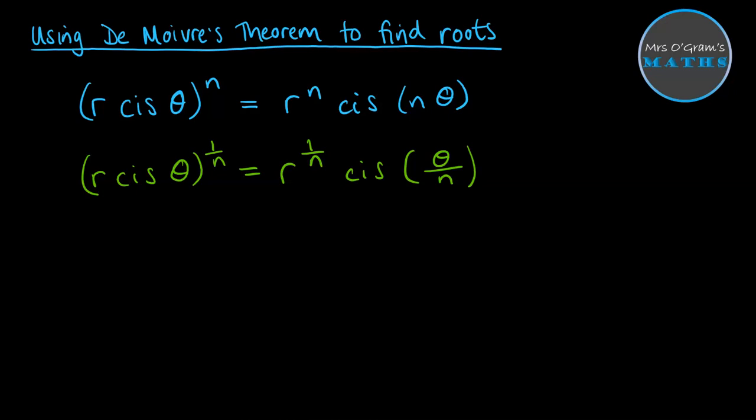So that looks like this. If you were doing something like you wanted to work out the fifth root of something, then you can do the fifth root of the modulus and then divide the argument by 5.